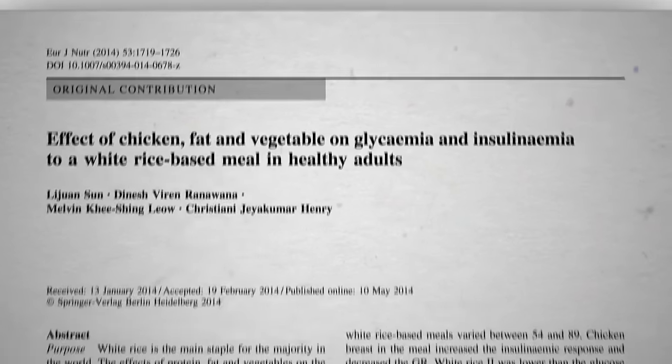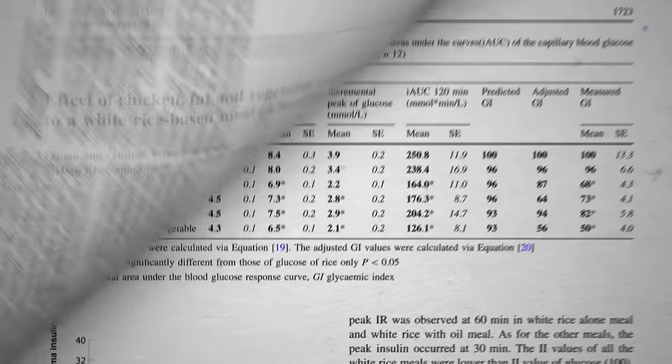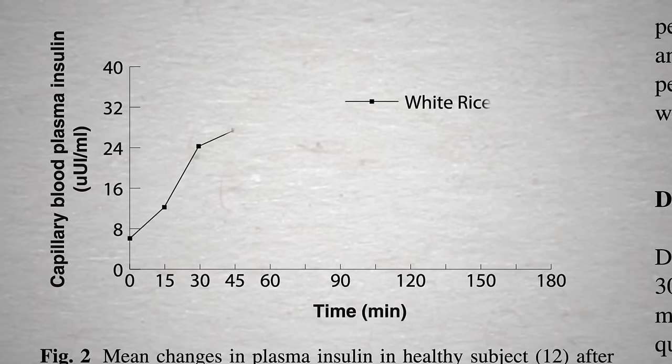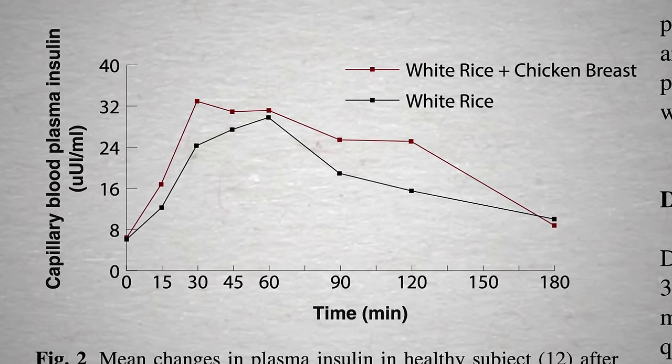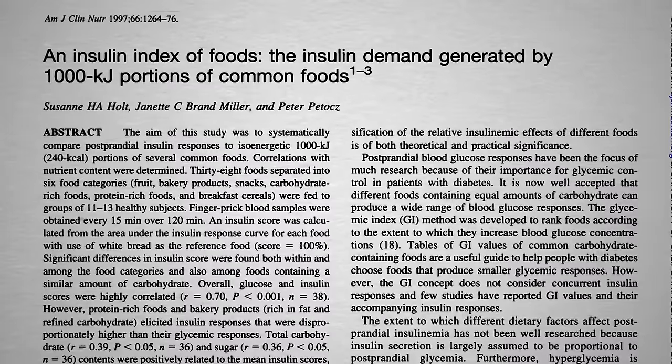We saw how adding even steamed, skinless chicken breasts can exacerbate the insulin spike from white rice, but fish may be worse.